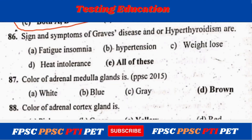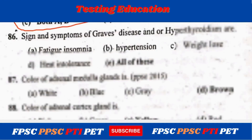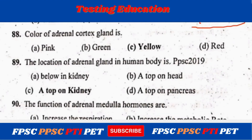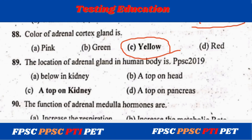Signs and symptoms of Grave's disease and hyperthyroidism are fatigue, insomnia, hypertension, weight loss, and heat intolerance — all of these. The color of the adrenal medulla gland is yellow. The location of the adrenal gland in the human body is atop the kidney.